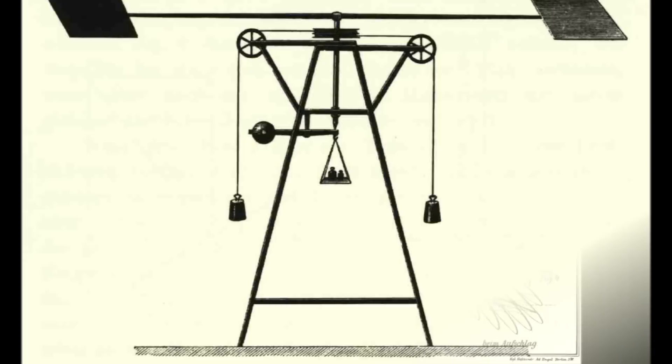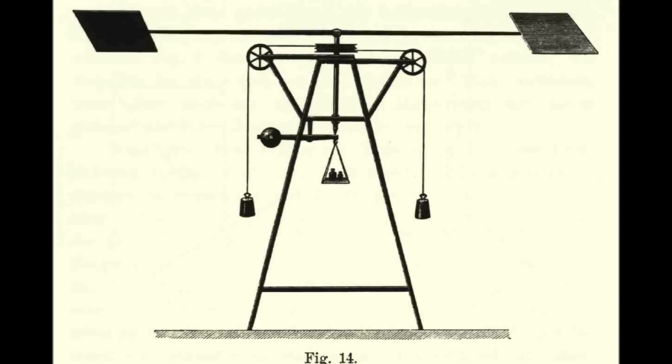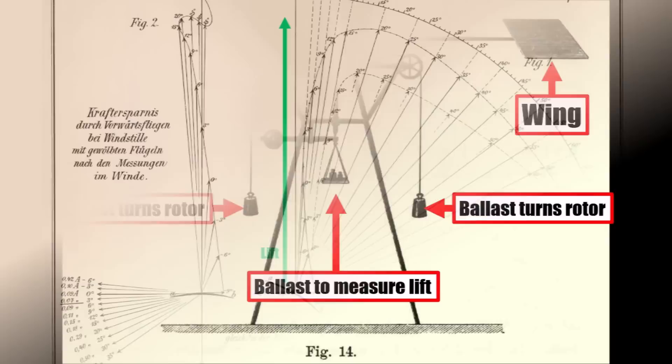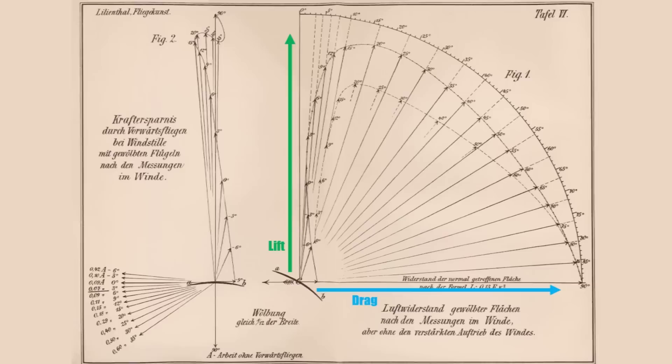Lilienthal built a machine to measure lift and drag of different wing sections — the so-called Rundlauf, which is similar to a helicopter today. He could fix one wing on either side, and the rotor with its two wings spun in a circle, driven by two weights at the side, similar to an old clock. The heavier the weights needed to be to spin the rotor, the higher was the drag. The rotor shaft could be lifted by the rotor itself, and the weight in the center helped to work out the lift of the rotor assembly. So now he could work out lift and drag of different wing sections at different angles.